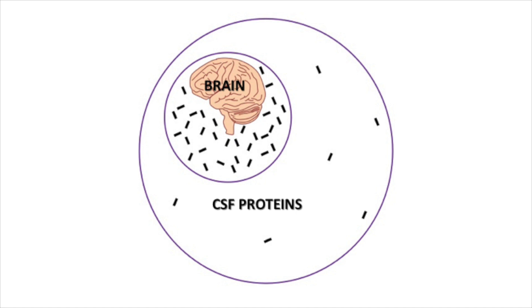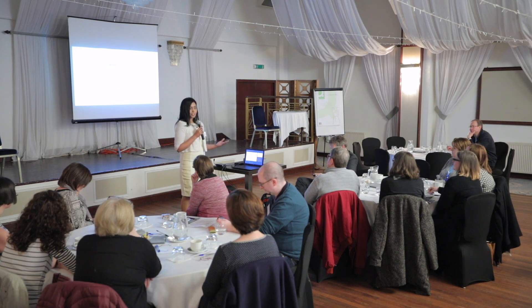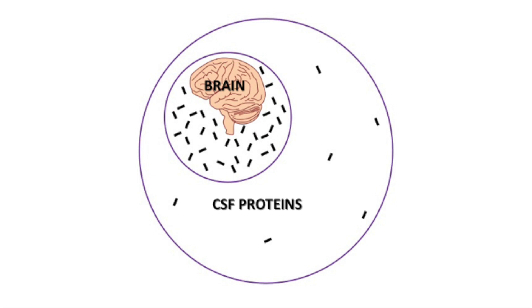If we move into the spinal fluid, the CSF is probably the best place to assess what's happening in the brain. We can't do brain biopsies — that's not a feasible option in practice — and often we're looking at that in a post-mortem perspective, so you don't understand what's happening at the beginning of the disease. But CSF, by essence of proximity, is very easy to measure, and you've got proteins sitting in the spinal fluid which indicate what's happening in the brain.